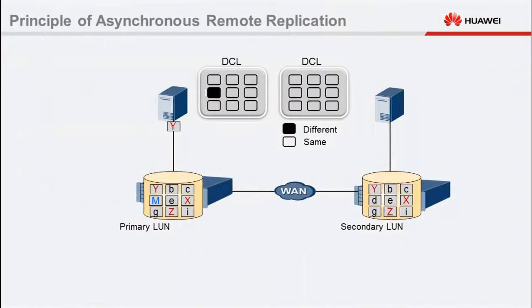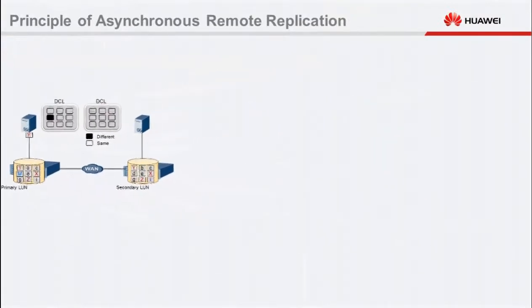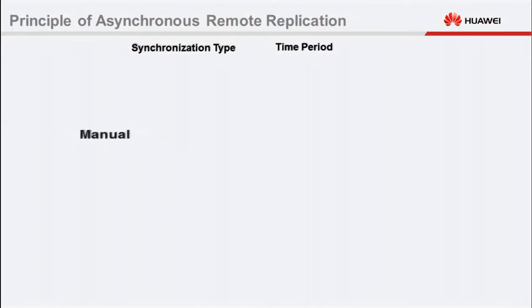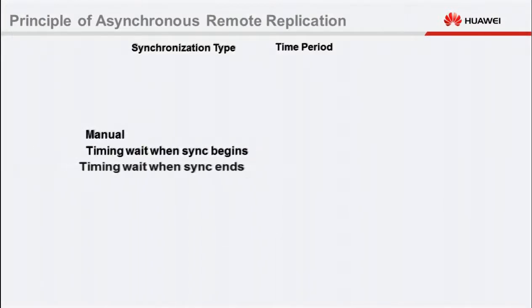Here comes a question: how does the storage system control the synchronization period? The storage system controls the synchronization period using two parameters: synchronization type and synchronization period. The period can be expressed in minutes and seconds — here we use minutes as an example. The synchronization type can be manual, timed wait when synchronization begins, or timed wait when synchronization ends.